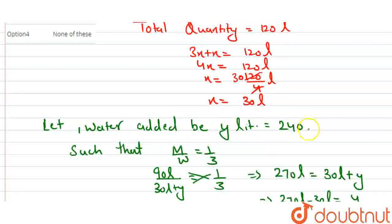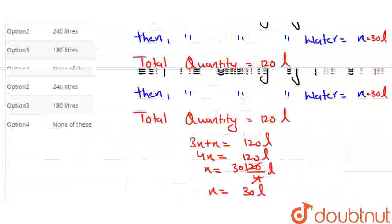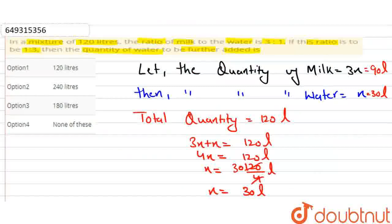So we can say that we need to add 240 liters of water so that the ratio becomes 1:3. Our answer is 240 liters, which is given in option 2, so option 2 is the correct answer to this question.